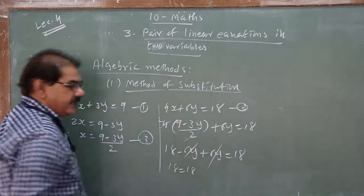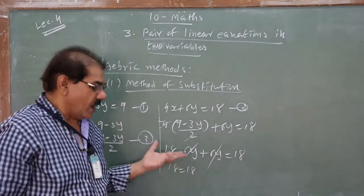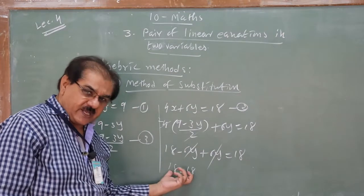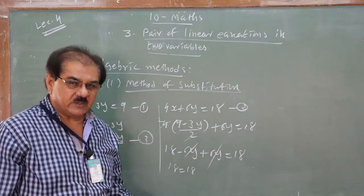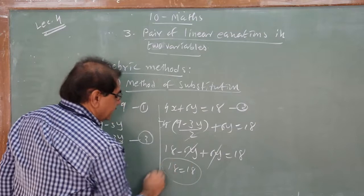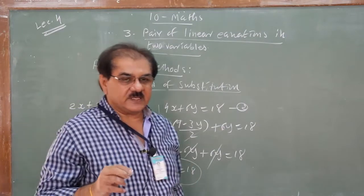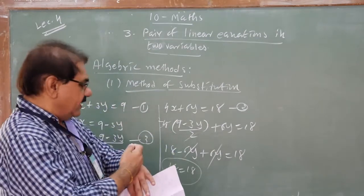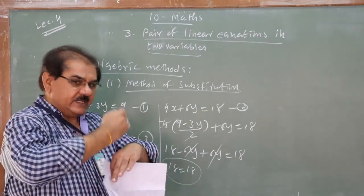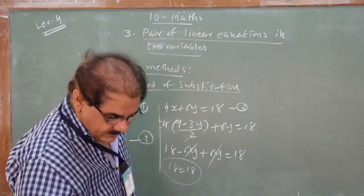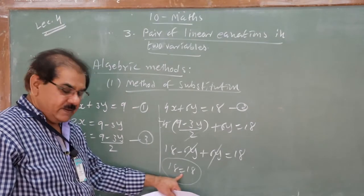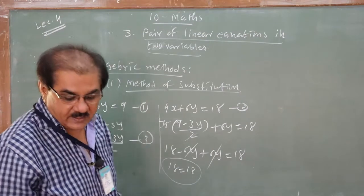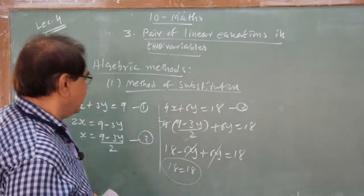Here there is no variable remaining, but the statement 18 = 18 is true. This means these two equations give infinitely many solutions — the lines are coincident. So when you eliminate the variable and get a true statement, the pair of equations has infinitely many solutions.